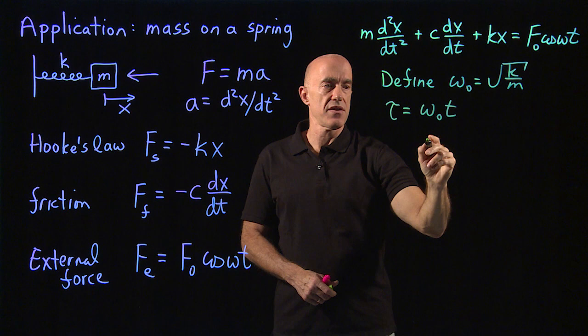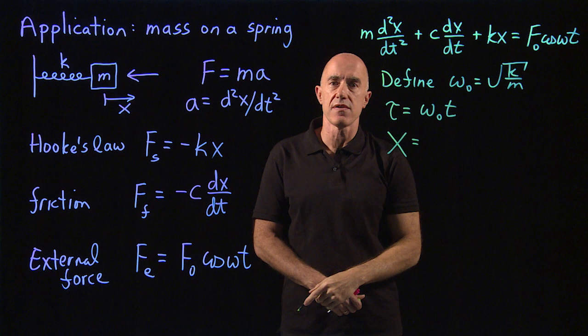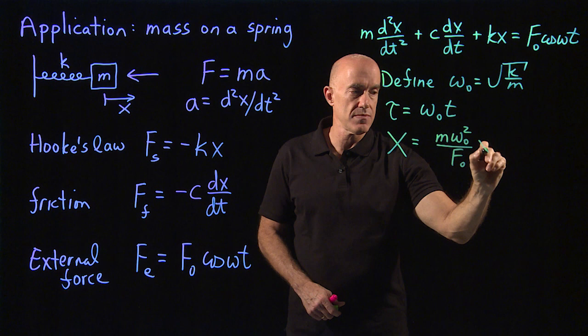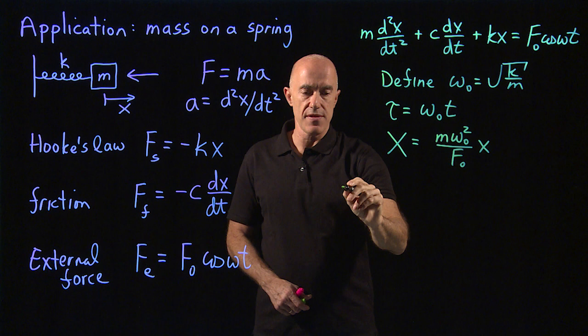Now we define the dimensionless time tau equal to omega naught times t. We can define a dimensionless position variable, let me call that capital X. If you work this out so that you want to get rid of the term in front of the cosine omega t, the correct scaling here is m omega naught squared divided by f naught times x.